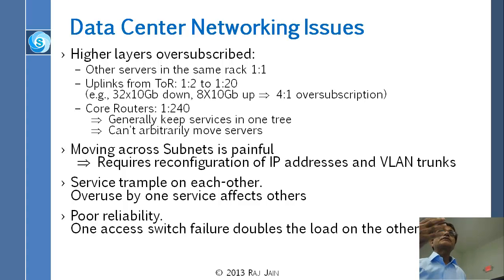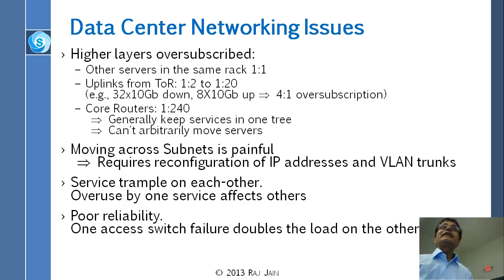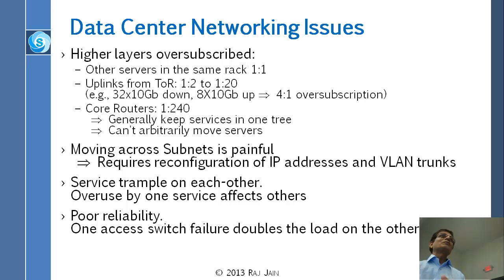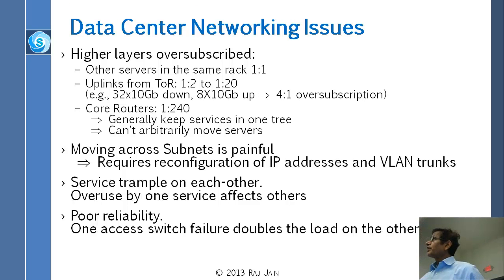If you are over-subscribed, there is only one gigabit and 240 people are trying to get in — somebody is going to be dropped. So that is another problem. Poor reliability: one existential failure doubles the load on the others. Now we want to design a network topology that will not have these problems.